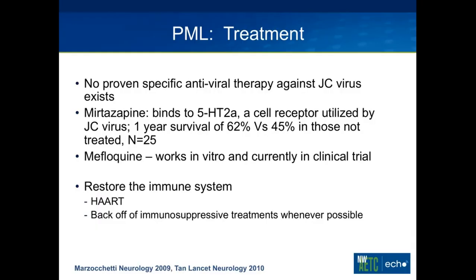Unfortunately, there is no good treatment for PML and no proven antiviral therapy against JC virus. Mirtazapine is often used in people who are doing poorly because it binds to one of at least two receptors that JC virus uses to enter cells, the 5-HT2A receptor. There is a small study with an N of 25 where survival rates were higher at one year in people treated with mirtazapine, though not statistically significant. There is also some in vitro data that mefloquine, used for parasitic infections, has activity against PML, and an international study is ongoing. Most of what we do to treat PML is simply improve the immune system — putting HIV-infected patients on antiretroviral therapy, or backing off immunosuppressive treatments to allow them to mount a CTL response.